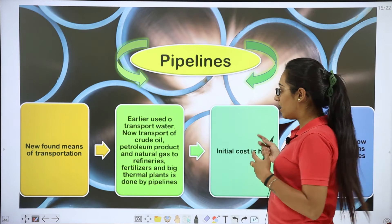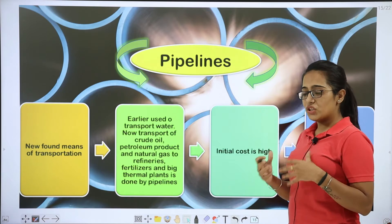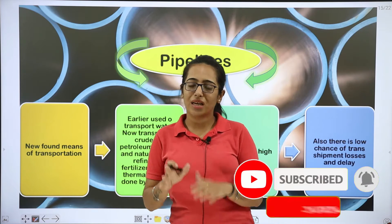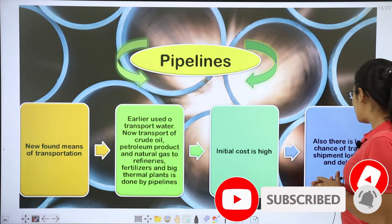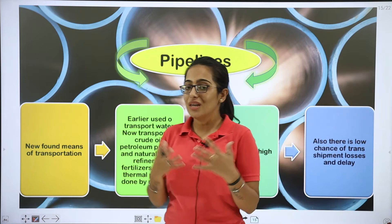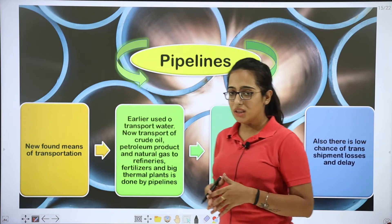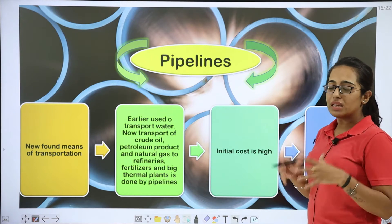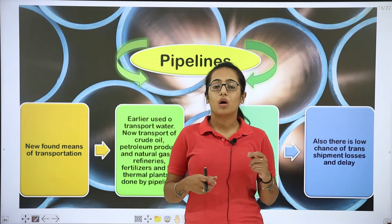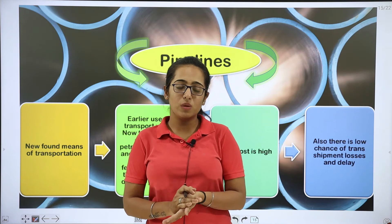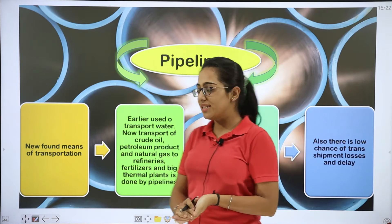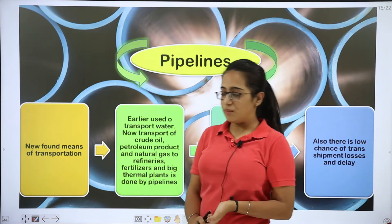These are the features of pipelines. The initial cost to lay them down is high — setting up a big thermal plant connection requires high starting investment. However, there is low chance of transshipment losses and delays, because underground there is no traffic. Delay chances are very low and losses are also less. Though pipelines can tear or cause loss, such issues are very rare because they are set up with very good quality and technology.